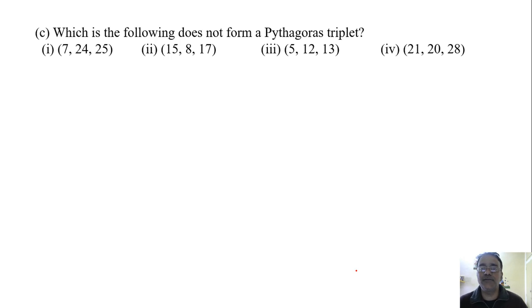Which of the following does not form a Pythagoras triplet? Now we will not see this question. First what we have to do, we have to identify the greater number here. Here 25, here 17, here 13 and here 28. Now we have to check that whether the sum of the square of the other two smaller numbers is equal to the square of the greater number or not. So just you have to do it in your mind. 49 plus 576 that is 625, 25 square, so this is correct.